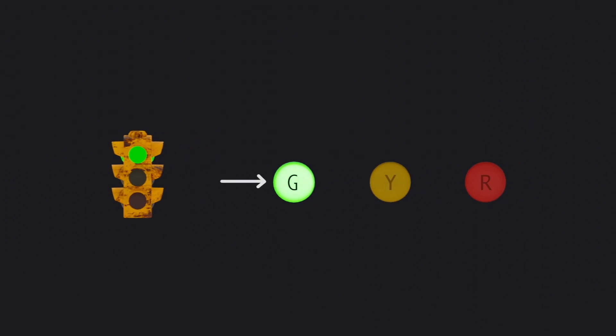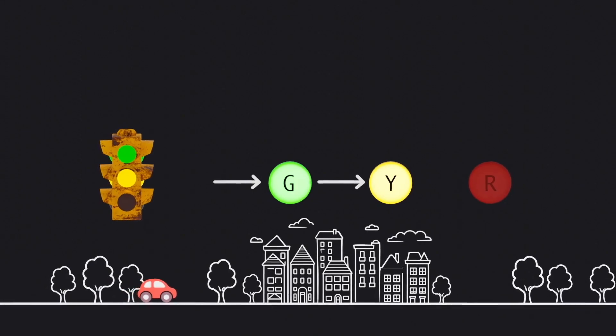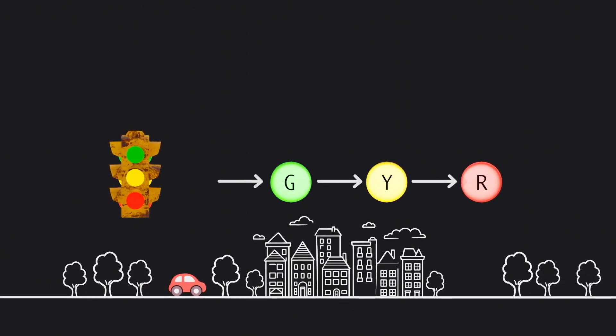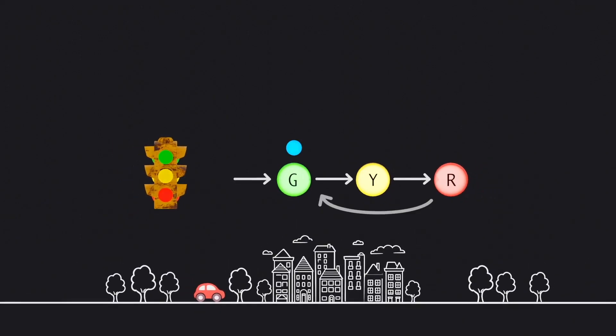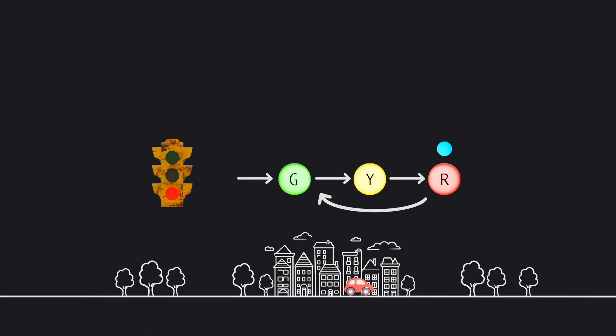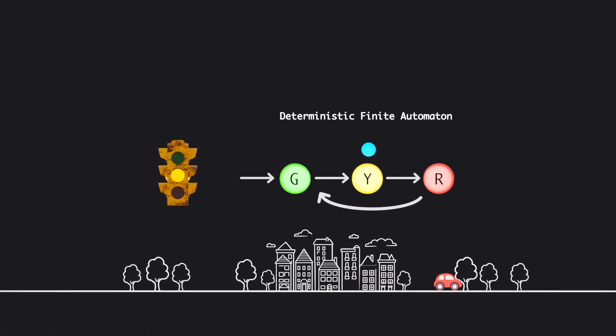Whichever state we begin with is known as the start state. When it is green, cars are allowed to move on the road. Then, it turns yellow to warn cars. Finally, it turns red and cars should stop. After a while, the red light turns green again and the cycle continues. Tada! We actually just created a deterministic finite automaton.